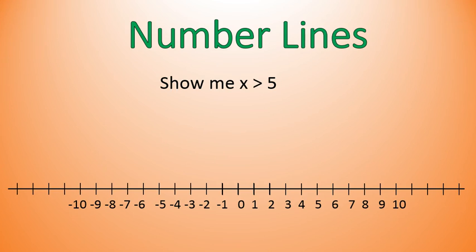Let's do an example. If I ask you to show x is greater than 5, that means all possible numbers greater than 5. I would start by marking the point 5, then draw an arrow showing everything greater than 5. That's it — that's how we show inequalities on a number line.